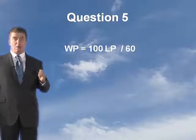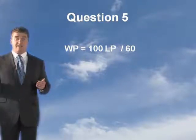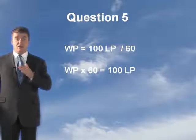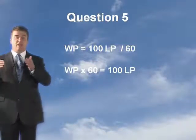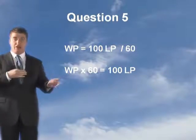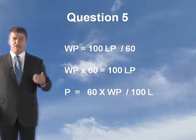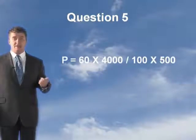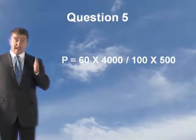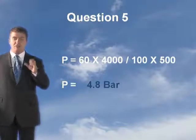To transpose it, you need to get everything attached to P to the other side. The whole right-hand side is divided by 60, so multiply both sides by 60: WP times 60 equals 100 LP. Then divide both sides by 100L, giving P equals 60 times WP divided by 100 times L. Putting the numbers in: P equals 60 times 4000 — don't forget it's in watts — divided by 100 times 500. P comes out at 4.8 bar. So you've got the pressure at the outlet.